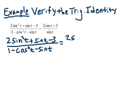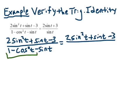So we have 2 sine squared t plus sine of t minus 3. We're going to leave the top alone for the moment and let's do a substitution. This part right here can become sine squared of t. And we'll copy the rest down.